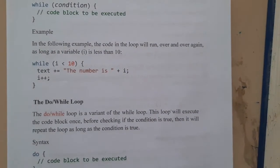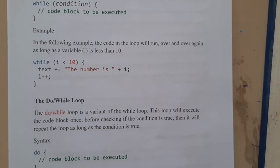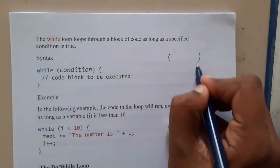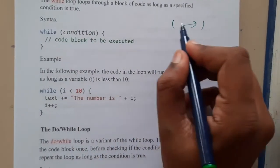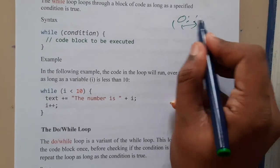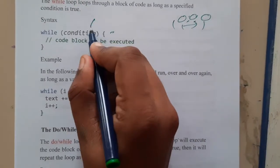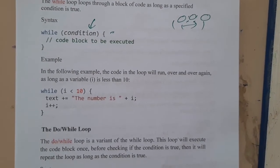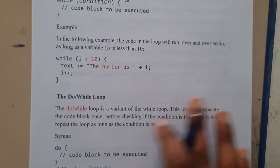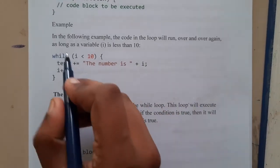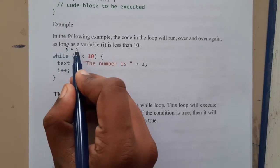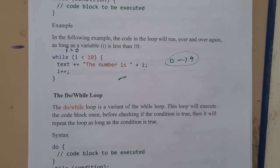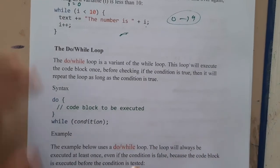Now let us go through the while loop. The while loop and for loop are almost the same in functionality. In a for loop you wrote initialization, condition, and increment all inside the brackets. In a while loop, you write only the condition inside the brackets — that is the only change. To print numbers 0 to 9, you initialize the value to zero outside, and the loop handles the rest.